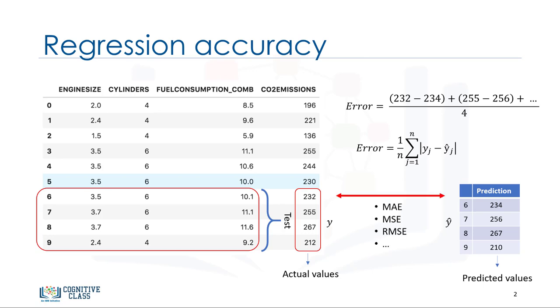We'll be reviewing a number of model evaluation metrics including mean absolute error, mean squared error, and root mean squared error. But before we get into defining these, we need to define what an error actually is.